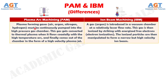Number 6: in plasma arc machining, plasma forming gases — air, argon, nitrogen, hydrogen — must be continuously pumped into the high pressure gas chamber. This gas gets converted to thermal plasma when it flows coaxially with the high temperature arc, and finally comes out of the chamber in the form of a high velocity plasma jet. Whereas in iron beam machining, a gas like argon is introduced in a vacuum chamber at a relatively lesser flow rate, and is then ionized by striking with energized free electrons — electron ionization. The ionized particles are then manipulated to form a narrow but high velocity ion beam.